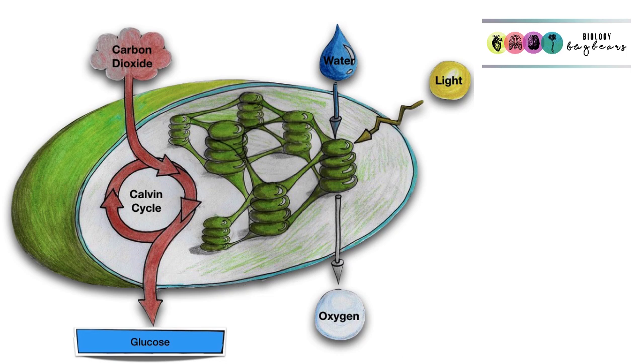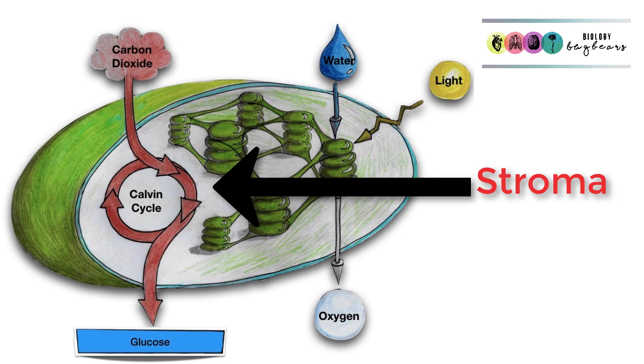Then the second stage of photosynthesis is known as the Calvin cycle, sometimes referred to as the dark stage reactions. It happens in the stroma of the chloroplasts, so the liquid part of the chloroplasts, and it involves the two products made in the light-dependent stage.